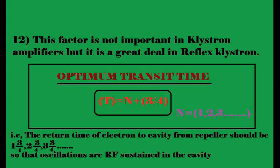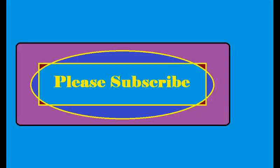The optimum transit time is given by T = n + 3/4, where this represents the return time of electrons to the cavity from the repeller space. Here, n is the bunching time for the reference electrons, and 3/4 represents the bunching period — the electrons complete one full cycle plus three-quarters of a cycle in traveling from cathode to repeller and back to the cavity gap. This optimum value is required to obtain a high-energy bunch, sustaining the high-frequency microwave oscillations in the reflex klystron oscillator.